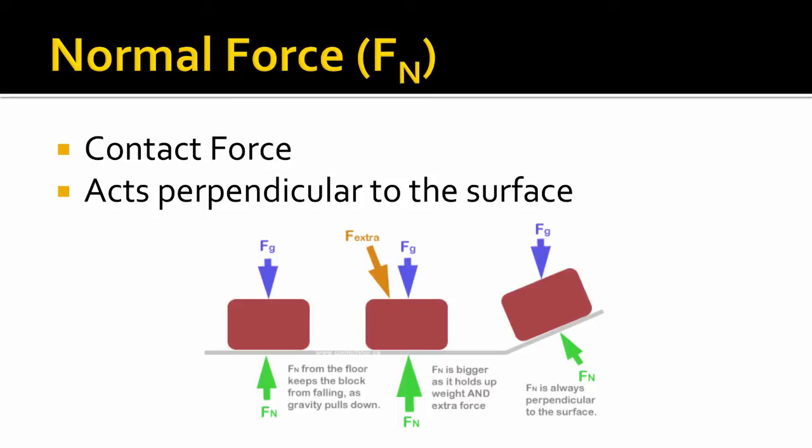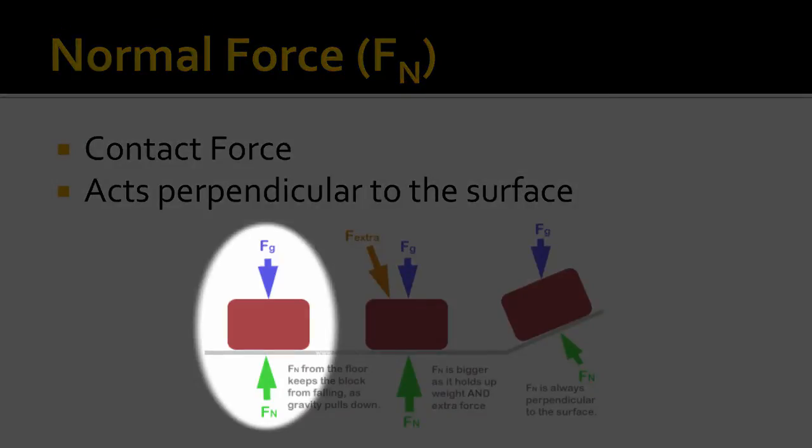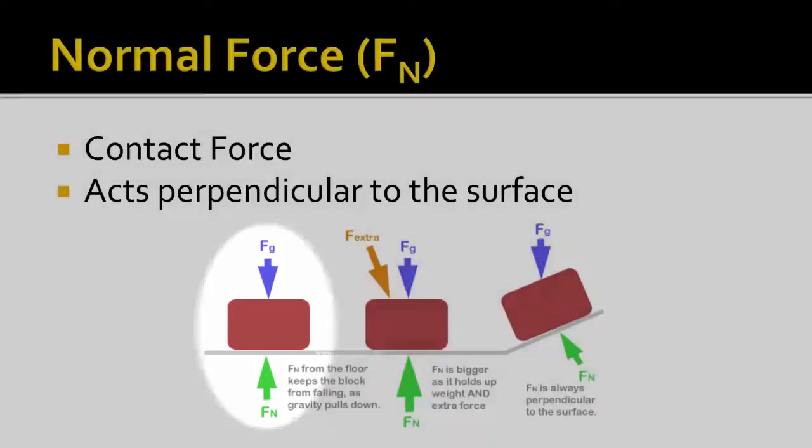Now a second force we'll find a lot of times is called the normal force. Normal is not as opposed to an abnormal force. Normal is the mathematical way of saying perpendicular. It is a contact force. It acts perpendicular to whatever surface there is. So you can see here this first block. You have the force of gravity acting downward on the block, and the block is being supported by the floor.